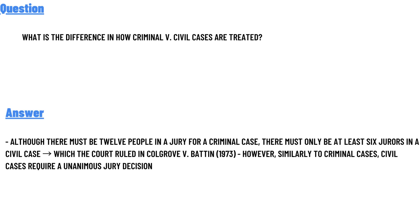The correct answer is: although there must be 12 people in a jury for a criminal case, there must only be at least six jurors in a civil case, as ruled in Colgrove v. Battin in 1973. However, similarly to criminal cases, civil cases require a unanimous jury decision.